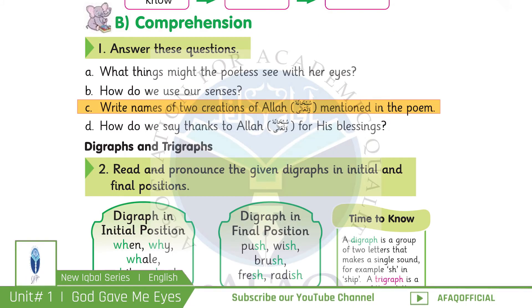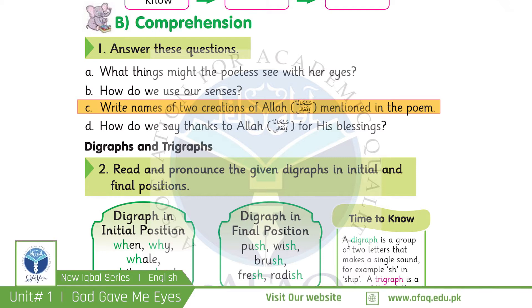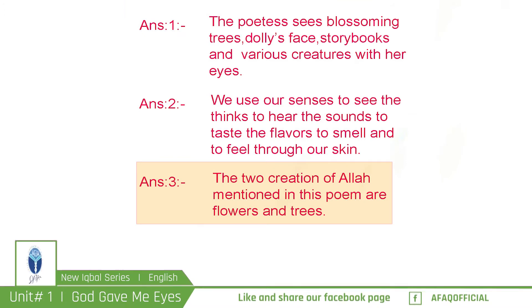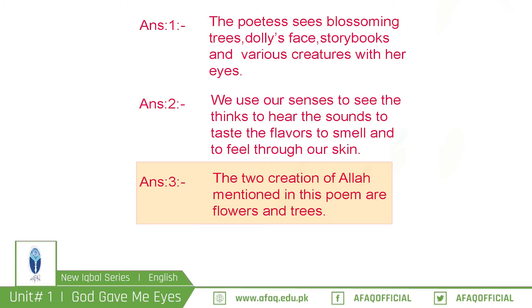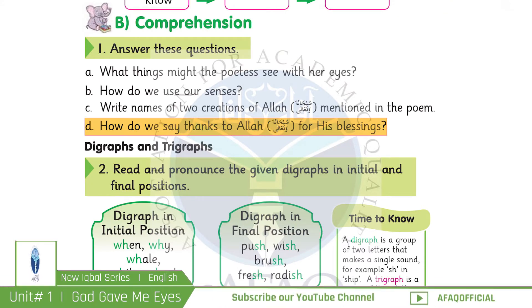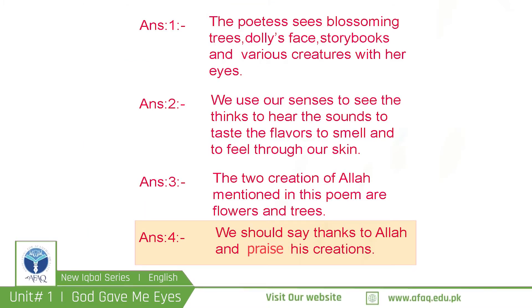The other question is: Write names of two creations of Allah Subhanahu wa Ta'ala mentioned in the poem. Allah Ta'ala کی بنائی ہوئی کوئی سی دو چیزوں کے نام جو اس poem میں دیے گئے ہیں۔ The answer is: The two creations of Allah Subhanahu wa Ta'ala mentioned in this poem are flowers and trees. Next question: How do we say thanks to Allah Subhanahu wa Ta'ala for His blessings? The answer is: We should say thanks to Allah and praise His creations.